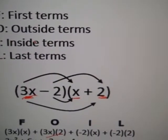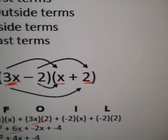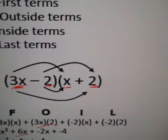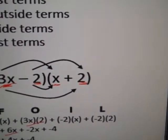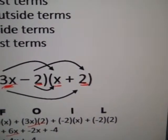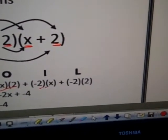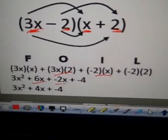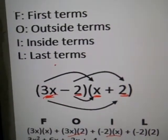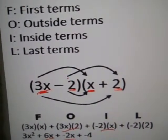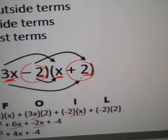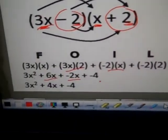Now, inner or inside term, the inside term of the first binomial is negative 2 and the inside term for the second binomial is x. Negative 2 times x, that should give us negative 2x. And then L stands for last. Do the last term, negative 2 and positive 2. Negative 2 times positive 2 is negative 4.